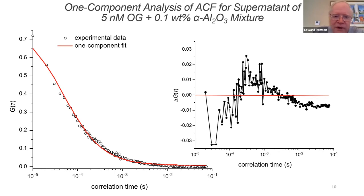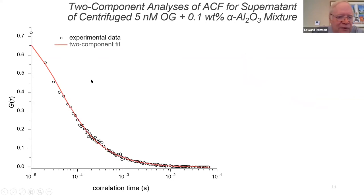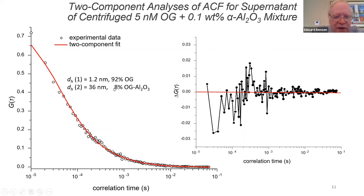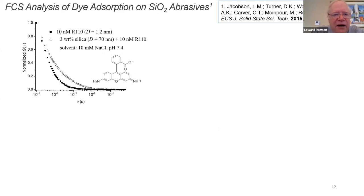There's a bound component and a free component, and the residual plots show that clearly. If we change the analysis to a two-component fit, we get a much better fitting of the data. We find that only eight percent of the Oregon green is bound, most of it is free, and the particle size is about 36 nanometers, which is in good agreement with the specification of 39 nanometers.